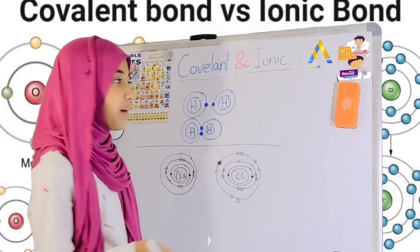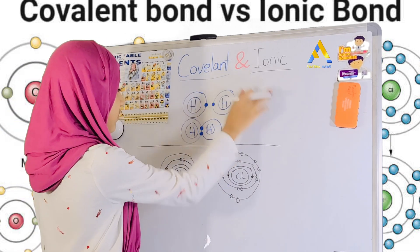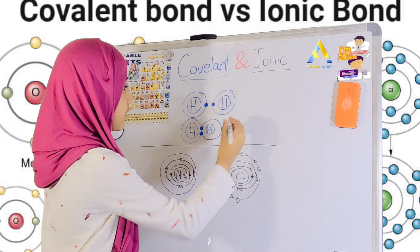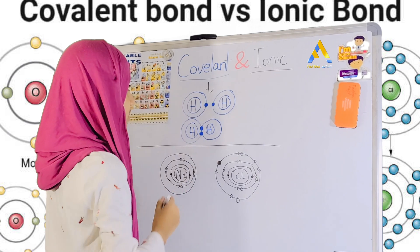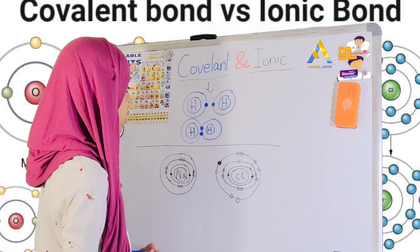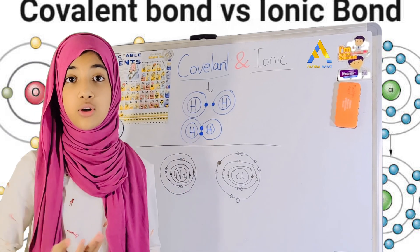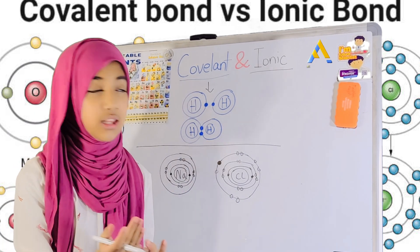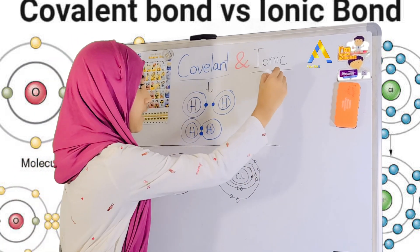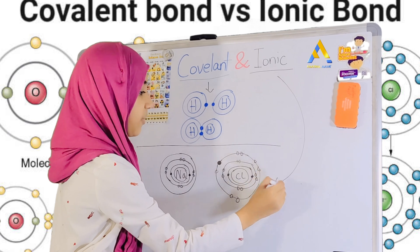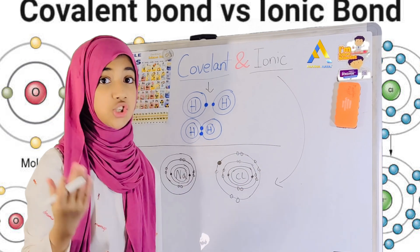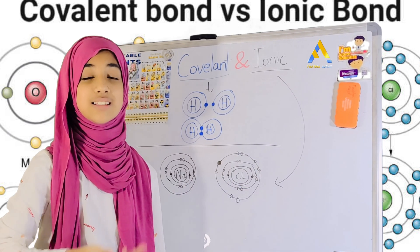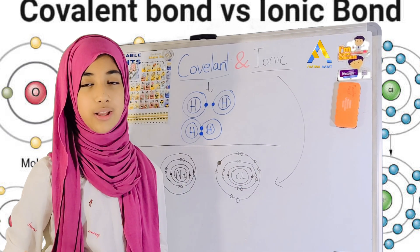See, dear viewers, in covalent bonds, it's not giving or taking — it's sharing in the middle. And in ionic bonds, it is not sharing, but it's giving or taking away.